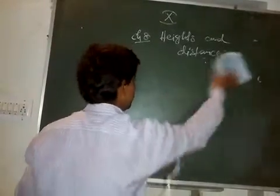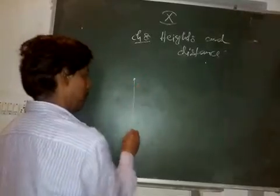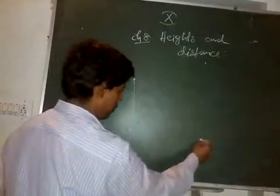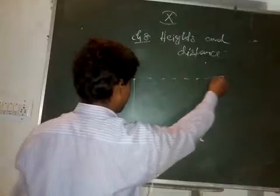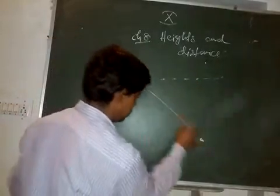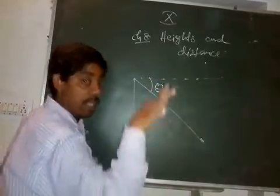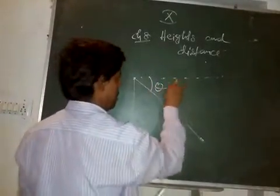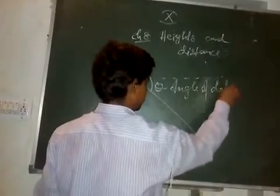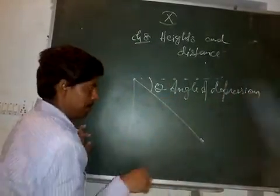Now there is another type of calculation. Suppose you are on the top of a mountain or cliff and you are looking down. This horizontal is the eye level. The angle that you are making downwards from the horizontal is known as the angle of depression. When you are looking down, you are making the angle of depression.